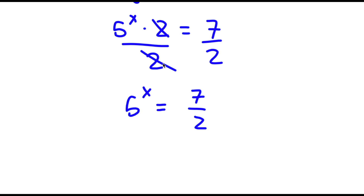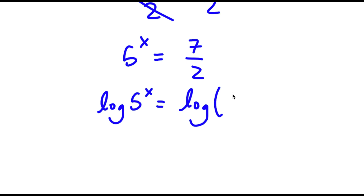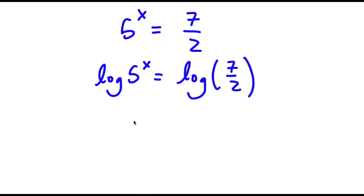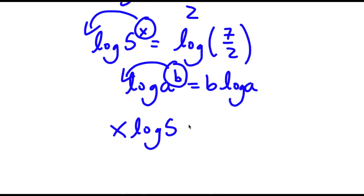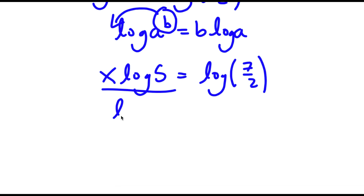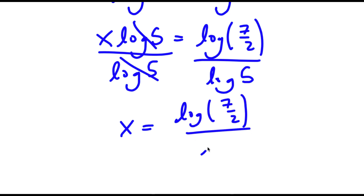From here I'm going to take the log on both sides. So now I have log of 5 to the power of x is equal to log of 7 over 2. If I have something in the form log a to the power of b, I can move b to the front, so it equals b times log a. So I have x times log 5 is equal to log of 7 over 2. Dividing both sides by log 5, I get x is equal to log of 7 over 2, all over log 5.